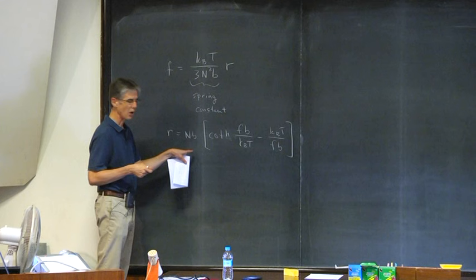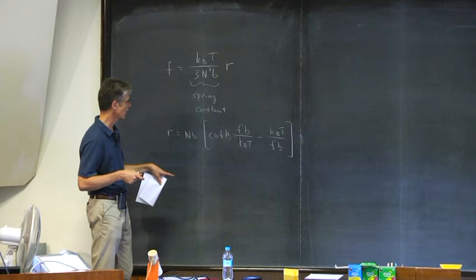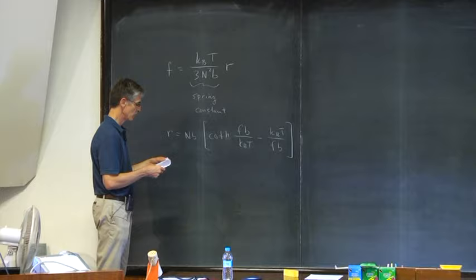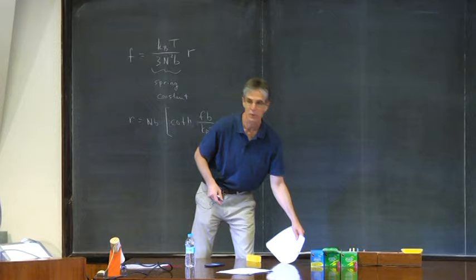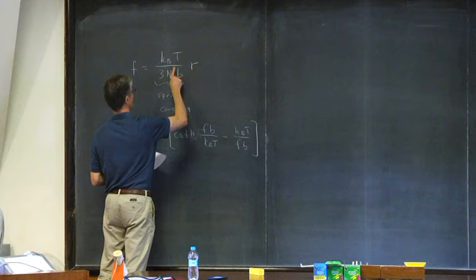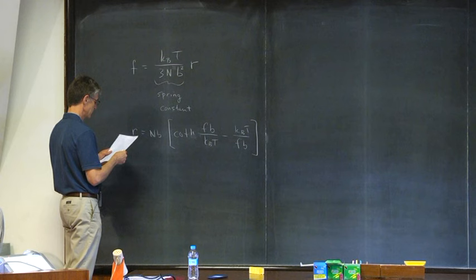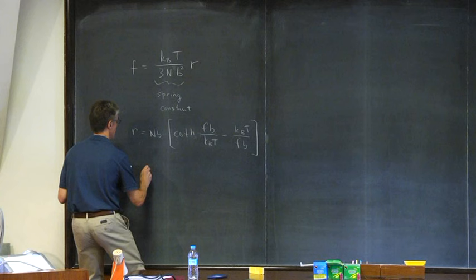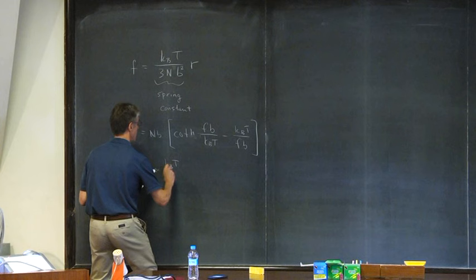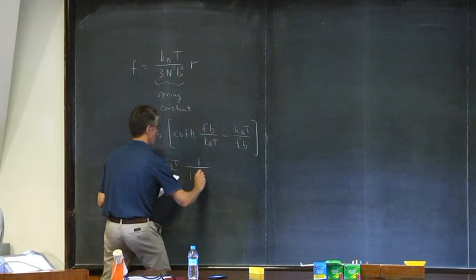The problem with it, of course, is that you can't solve it in closed form for F, so it's sort of an inverse function. In the limit that FB is much greater than K_B T, you can solve for F as proportional to 1 over 1 minus R over NB.